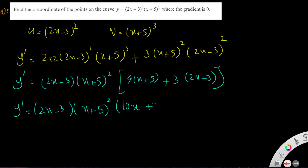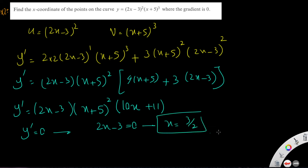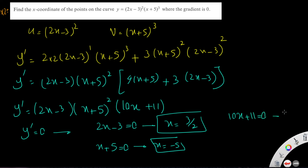The gradient is zero, so the differentiation must equal zero. Setting each factor to zero: (2x minus 3) equals 0 giving x equals 3/2; (x plus 5) equals 0 giving x equals negative 5; and (10x plus 11) equals 0 giving x equals negative 11/10. These are the three x-coordinates where the gradient is zero.